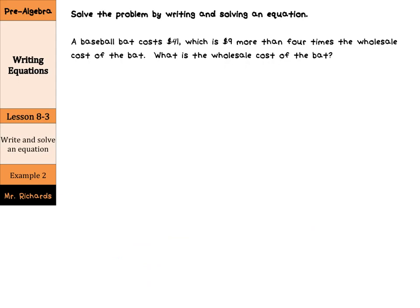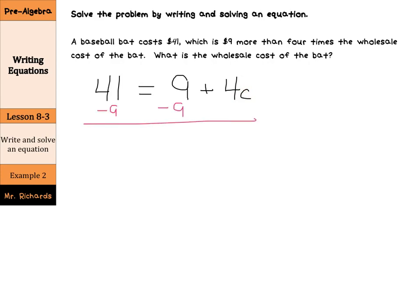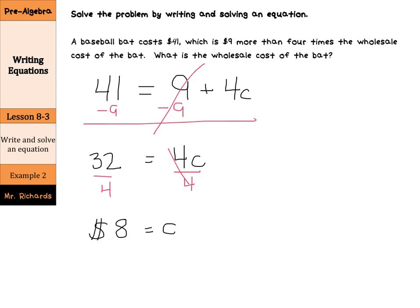The bat costs $41, and 'which is' means equals — $9 more, so $9 plus 4 times the cost of the bat. We'll use C for cost. Let's make sure it makes sense: $41 equals 9 more than four times the cost — okay, cool. Now we solve for C by subtracting 9 from both sides. That cancels, leaving us with 32 equals 4C. Now we divide by 4 on both sides, and we're left with $8 equals the cost of the bat.